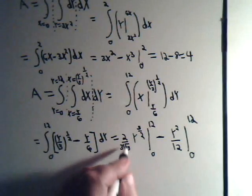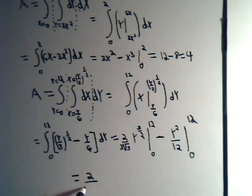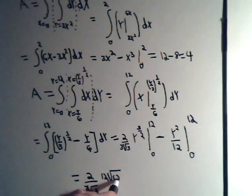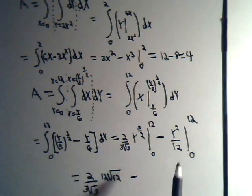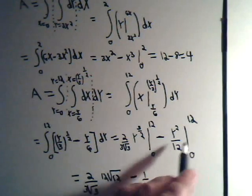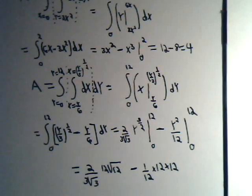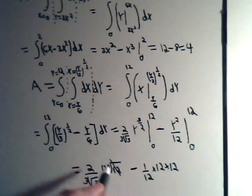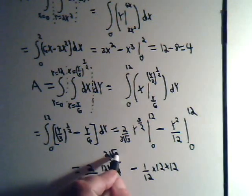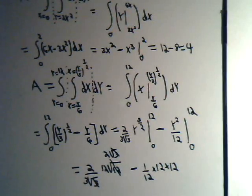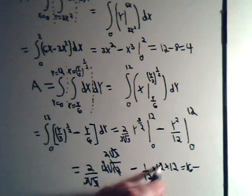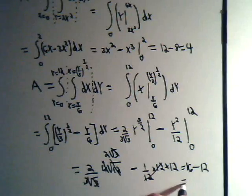So y goes from 0 to 12. Let's see. What would this give us here? We have 2 over 3 square root of 3, 12 to the three-halves. That's 12 times the square root of 12. It's just 0 for this part. And here we'll have 1 over 12 times 12 squared. And just 0. So, let's see. That's the square root of 4 times the square root of 3. Or 2 times the square root of 3. These cancel out. 3 goes into 12 4 times. 2 times 4 is 8 times 2 is 16 minus 12. And that gives us, again, 4.